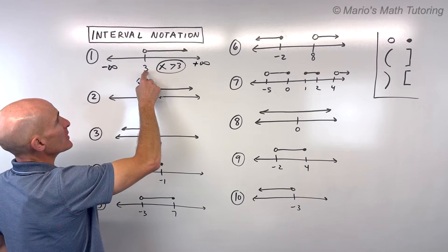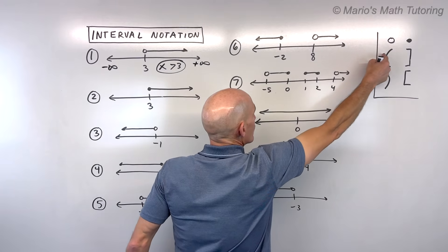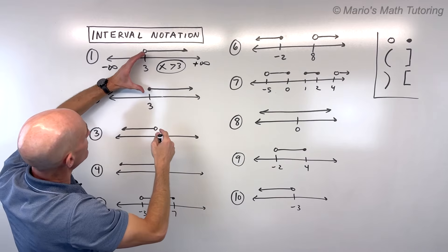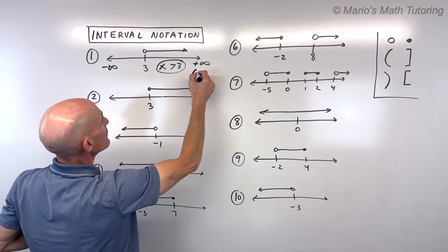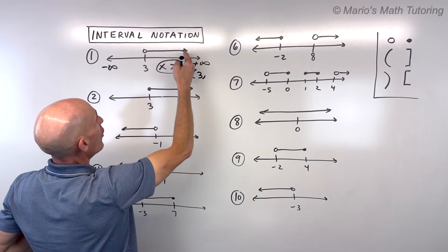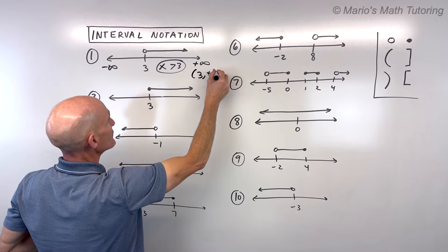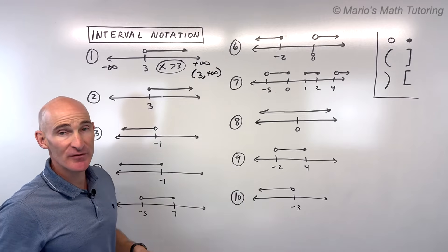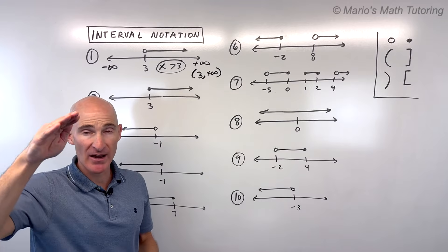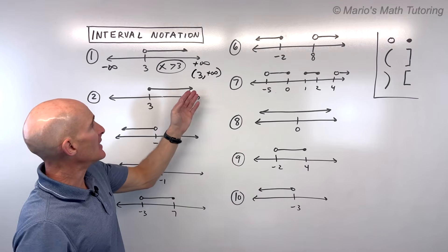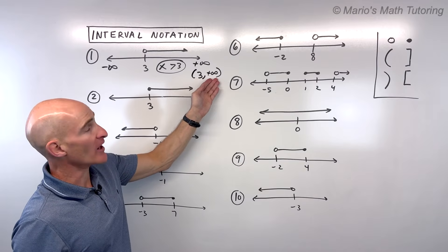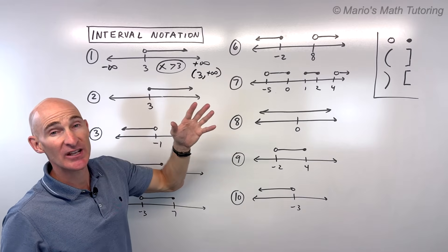If it doesn't include 3, we use the parenthesis. So we're going to go with a left parenthesis like this: 3 comma all the way to positive infinity. You can never reach infinity, so that's always going to be open, always going to have that parenthesis. Again, low to high, or left to right. That's going to be our solution in interval notation.